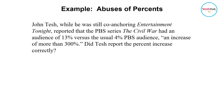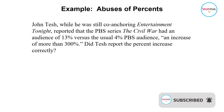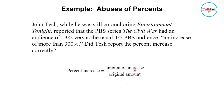This is an example of an instance wherein percent could get easily abused. John Tesh, while he was still anchoring Entertainment Tonight, reported that the PBS series The Civil War had an audience of 13 percent versus the usual 4 percent PBS audience — an increase of more than 300 percent. Did Tesh report the percent increase correctly? To compute the percent increase, follow this formula: amount of increase divided by the original amount. So 13 percent minus 4 percent equals 9, divided by the usual 4 percent.